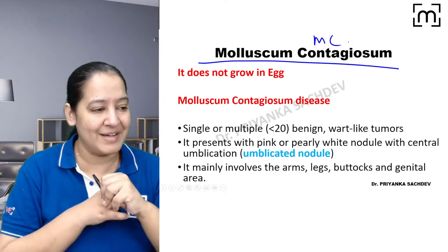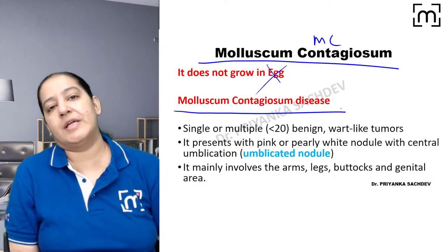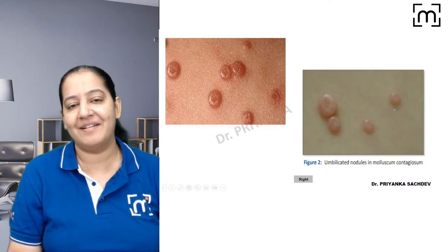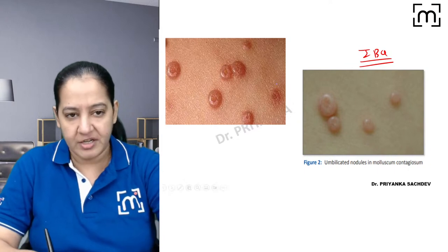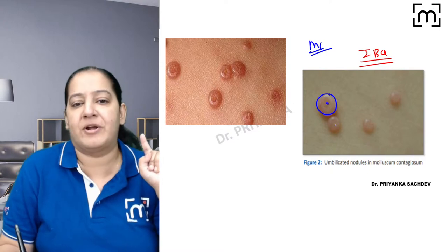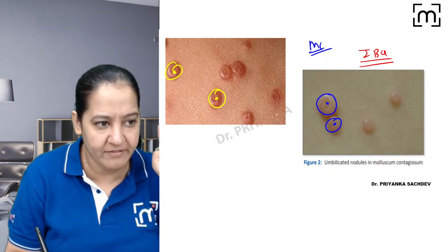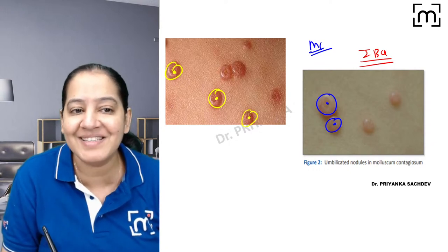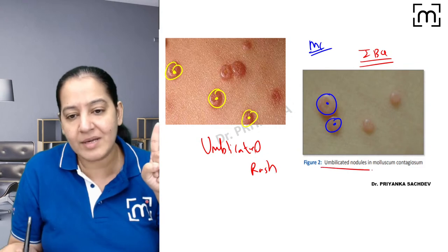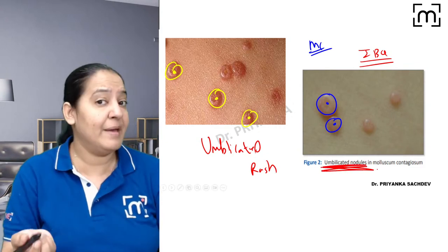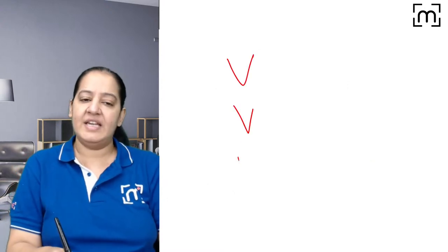The third virus is Molluscum contagiosum virus. It is the only Poxviridae member that cannot be grown in eggs. It causes a disease called molluscum contagiosum — a rash with a characteristic central depression. This central depression is called an umbilicated nodule — very important for image-based questions and MCQs. The hallmark is umbilicated (centrally depressed) nodules.